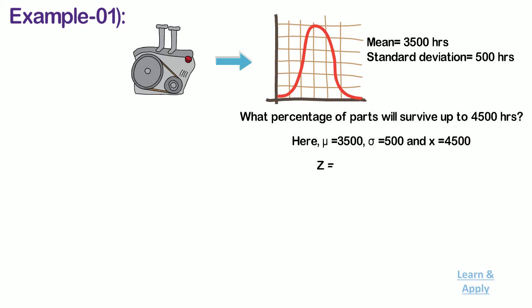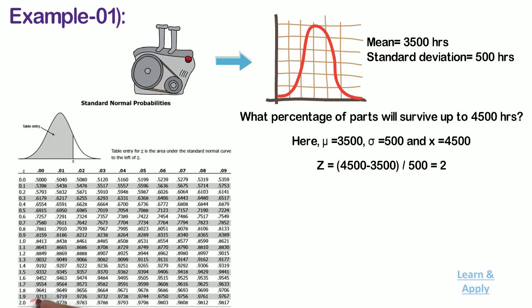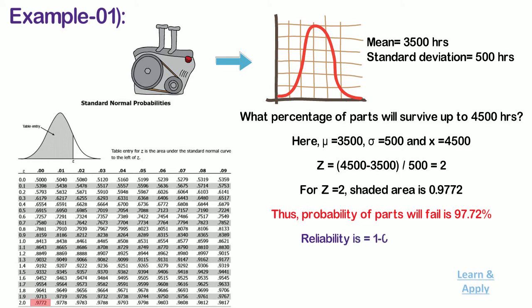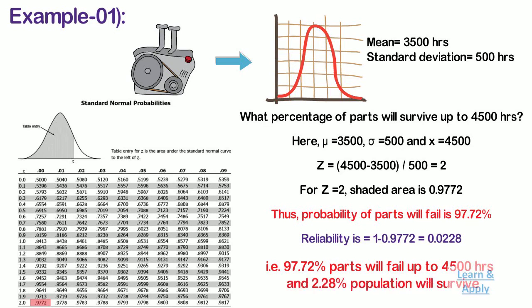Then Z equals 4500 minus 3500 divided by 500, which equals 2. For Z equal to 2, the shaded area is 0.9772. Thus, probability of parts that will fail is 97.72%. And reliability equals 1 minus 0.9772, which equals 0.0228. That is, 97.72% of parts will fail up to 4500 hours and 2.28% of the population will survive.